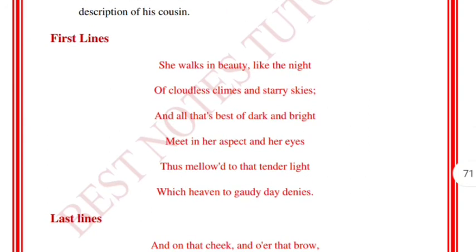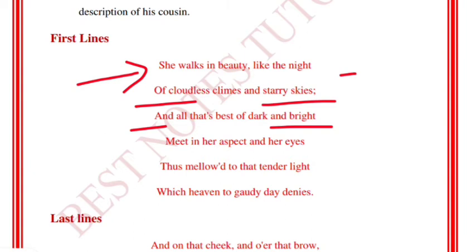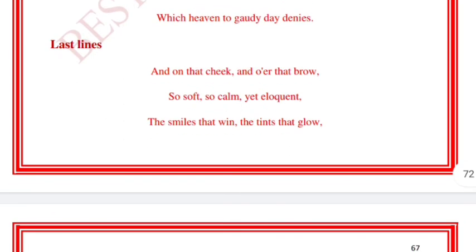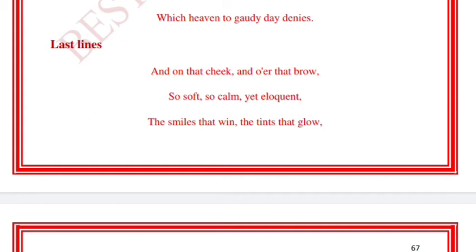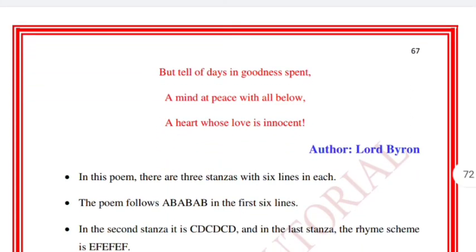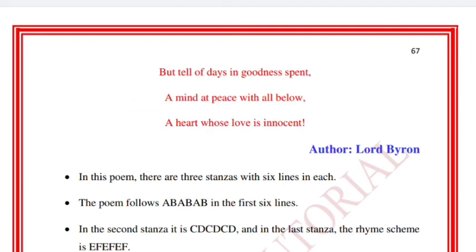The first lines are: 'She walks in beauty, like the night / Of cloudless climes and starry skies / And all that's best of dark and bright / Meet in her aspect and her eyes / Thus mellowed to that tender light / Which heaven to gaudy day denies.' The last lines are: 'And on that cheek, and o'er that brow / So soft, so calm, yet eloquent / The smiles that win, the tints that glow / But tell of days in goodness spent / A mind at peace with all below / A heart whose love is innocent.'